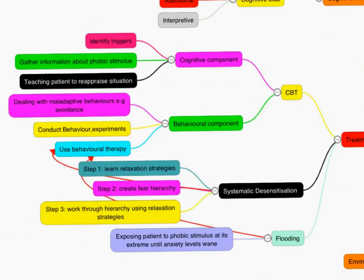So, now that we've looked at psychological causes of a phobia, let's look at psychological forms of treatment. We'll start with cognitive behavioural therapy, which is a talking therapy. In terms of the cognitive component, we look at triggers. What environmental circumstances lead to the fear or anxiety response? We get the patient to gather information about the phobic stimulus.